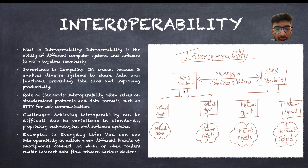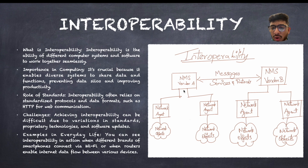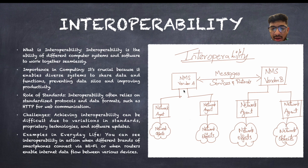So what are the challenges we have in interoperability? Achieving interoperability can be difficult due to variations in standards, proprietary technologies, and software updates. For example, if vendor A is Google and vendor B is Samsung, Google can sometimes update their protocols or add many other functions, and that might not work in Samsung. That is one of the challenges we can face here.